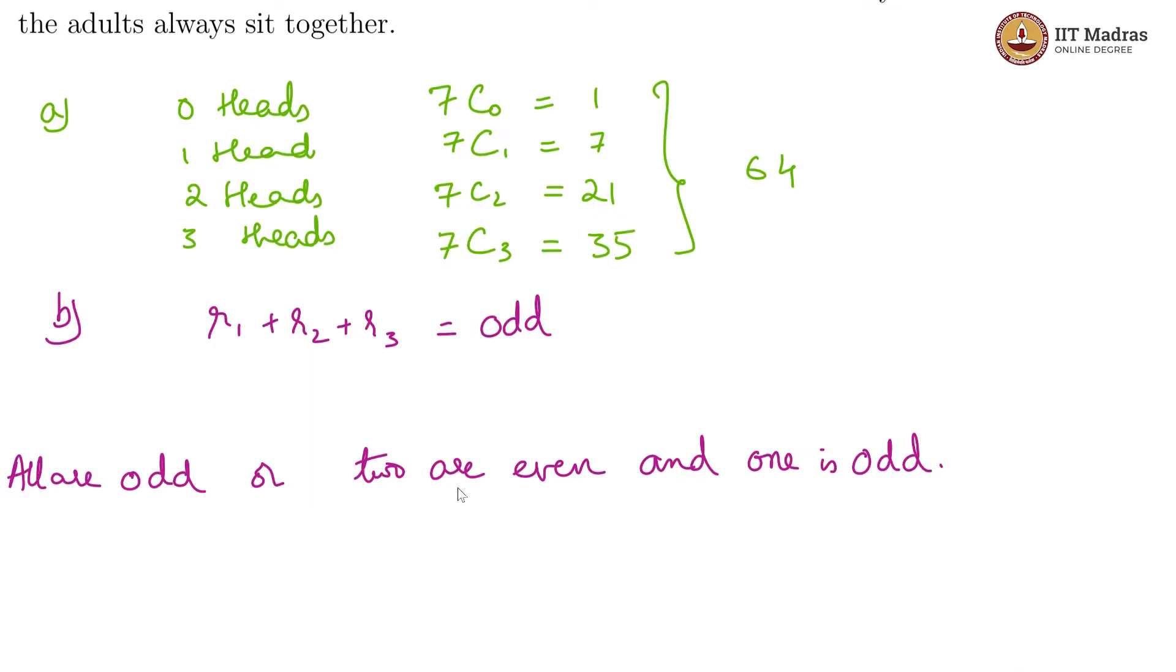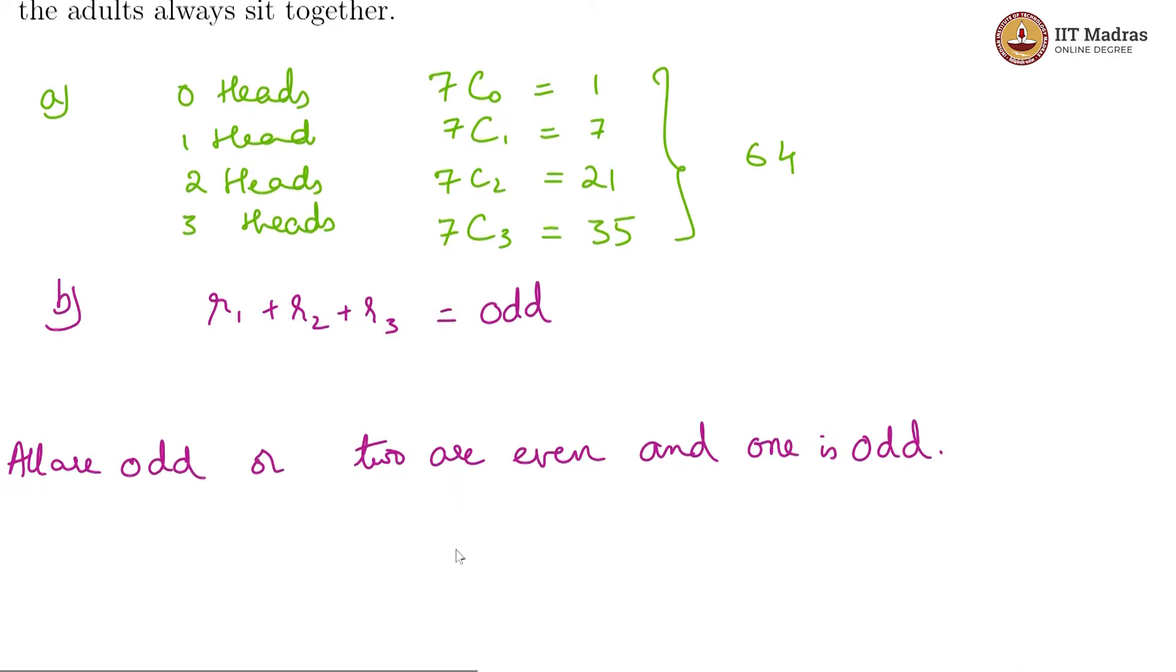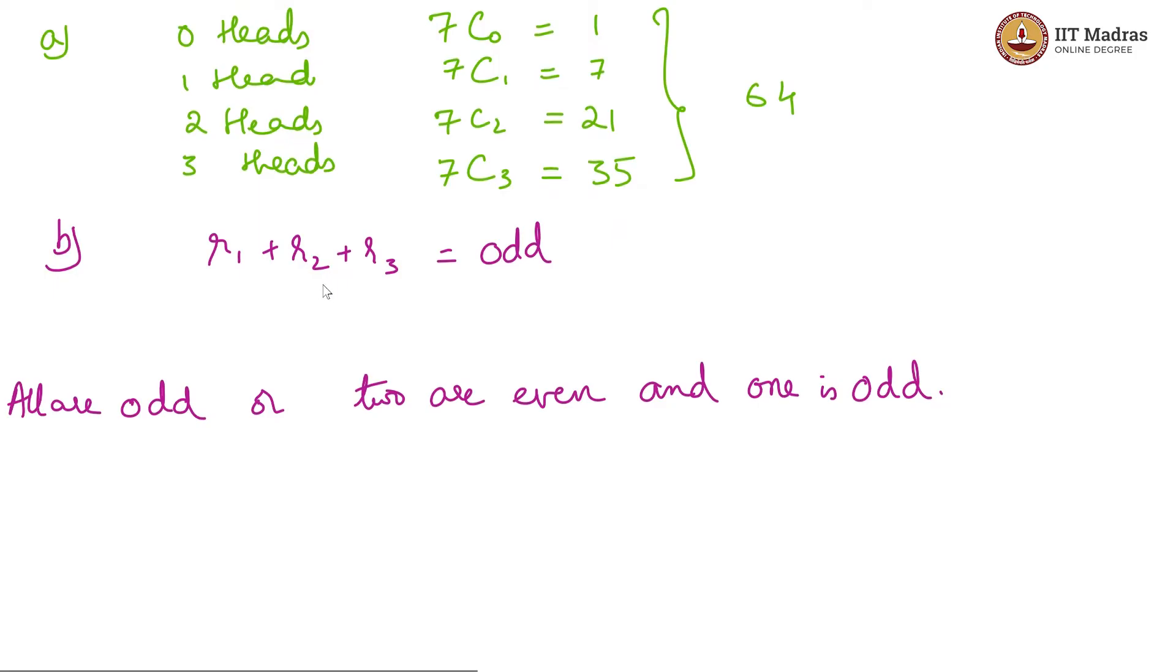So, why are these only two cases? Suppose we consider the other cases where all are even. If all are even, you are going to get the sum is even. And if there is only one even and two odd, the sum of two odds will be even. So, even plus even will give you even. So, these are the only cases we have and now let us look at them.